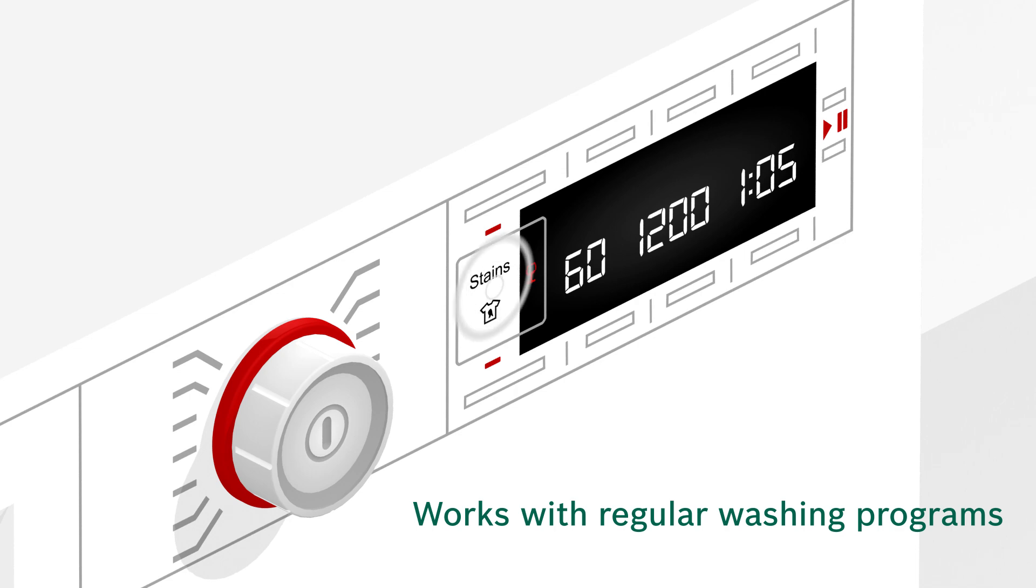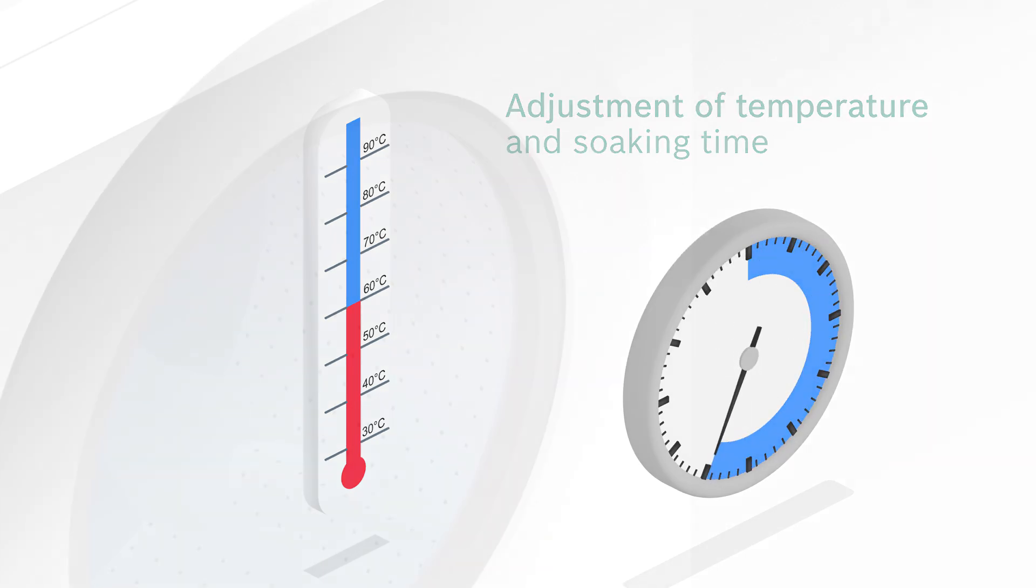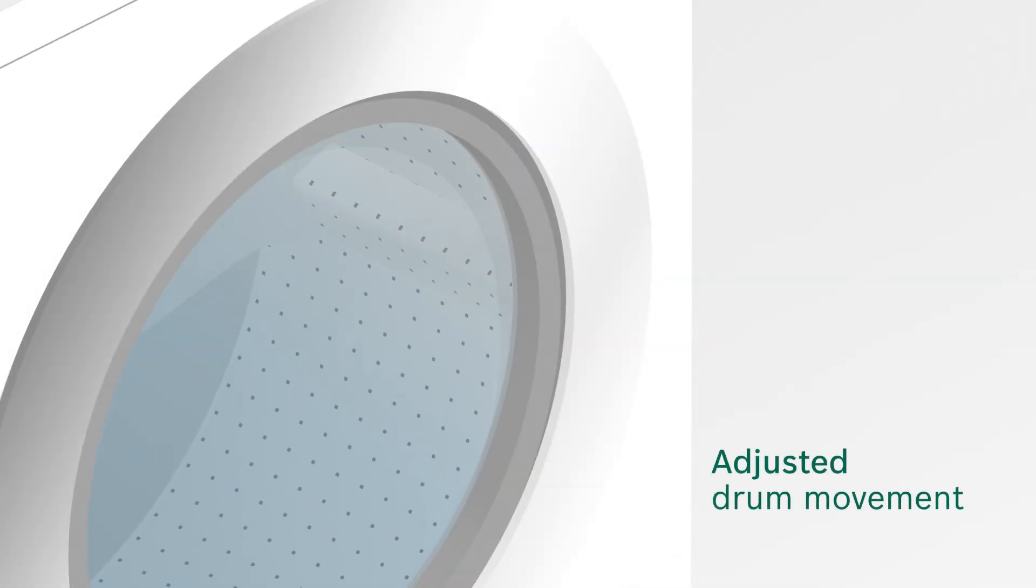You can add anti-stain to regular washing programs. According to the selected type of stain, the temperature or soaking time is adjusted, and even the drum movement is adapted accordingly.